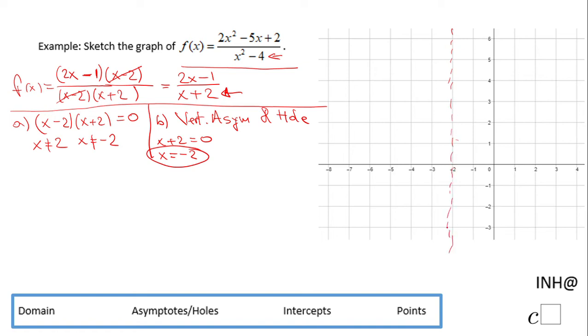But because this x equals 2 was cancelled out when we simplified, that will be a hole.